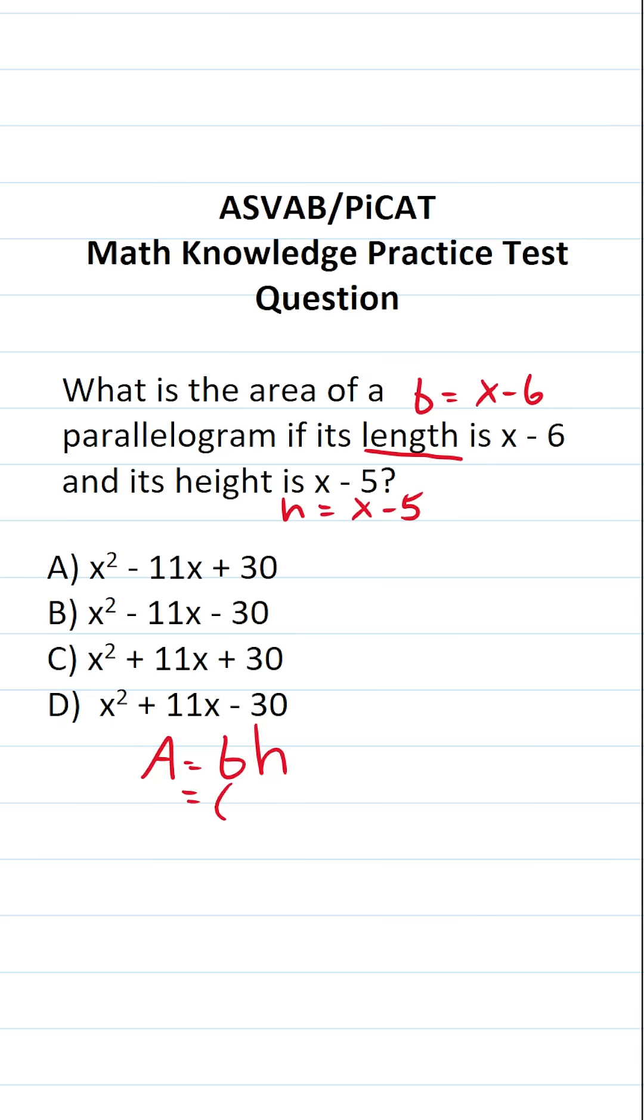This becomes x minus 6 times x minus 5. Of course, we have to multiply this out using the FOIL method. That is to say we're going to take x and multiply it here and here. Then we're going to take negative 6 and multiply it here and here.